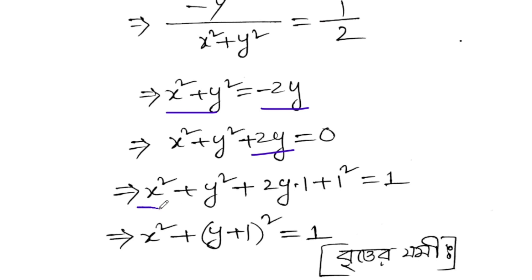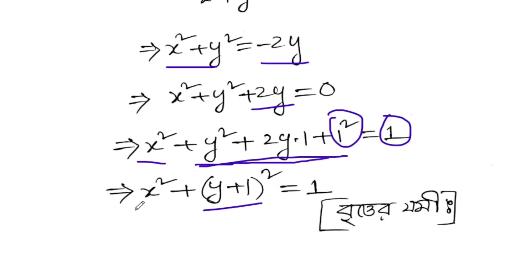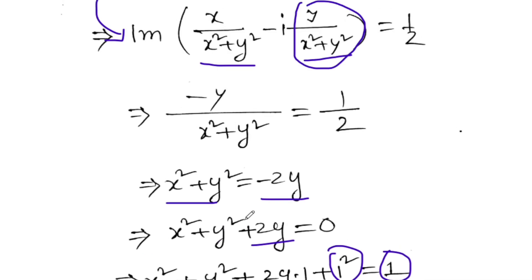Using the completing the square formula: X squared plus (Y plus one) squared equals one. And that's the final answer. This is the locus - a circle equation. Thank you for watching.